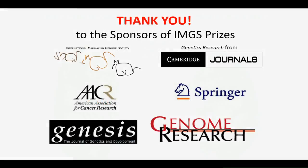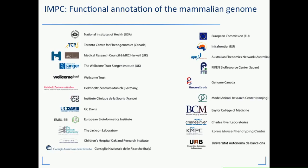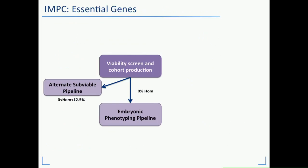Next up we have Stephen Murray, whose title is Large-Scale Discovery of Embryonic Lethal Phenotypes in Mice. I want to thank the organizers for putting this together and thank Martin for an outstanding introduction, because I can introduce the entire IMPC with his acknowledgement slide. Not only was the adult phenotyping you just heard about a large-scale consortium effort, so was the embryonic phenotyping. One of the major goals of the IMPC is to produce cohorts of adult mice for a large series of clinical tests and screens.